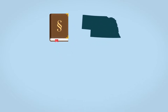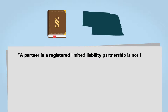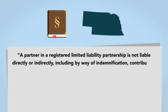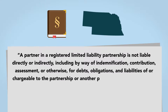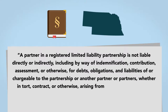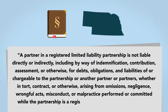An example of a state LLP statute is Nebraska's, which provides: a partner in a registered limited liability partnership is not liable directly or indirectly, including by way of indemnification, contribution, assessment, or otherwise for debts, obligations, and liabilities of or chargeable to the partnership or another partner or partners, whether in tort, contract, or otherwise, arising from omissions, negligence, wrongful acts, misconduct, or malpractice performed or committed while the partnership is a registered limited liability partnership.